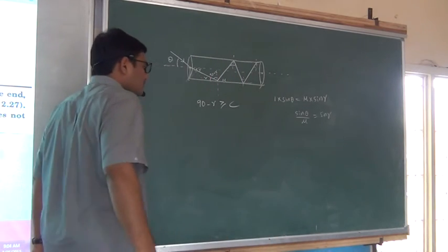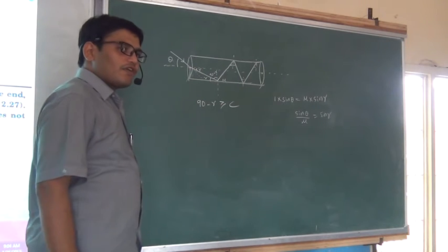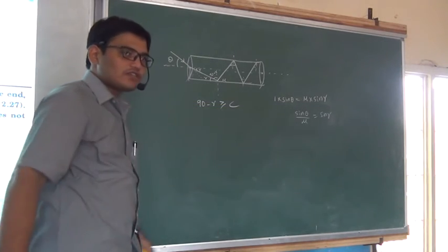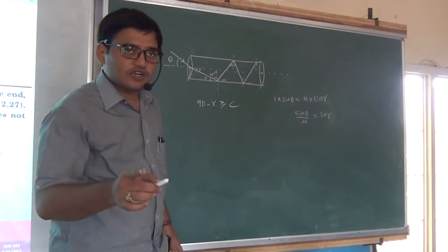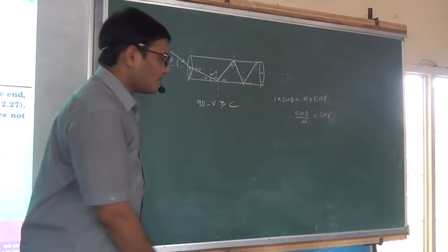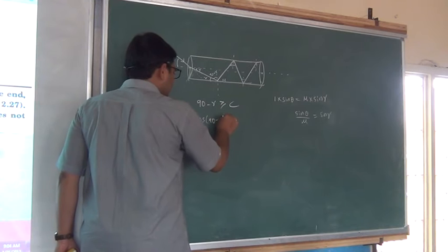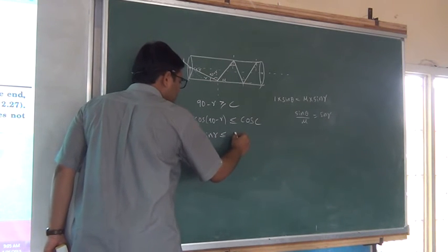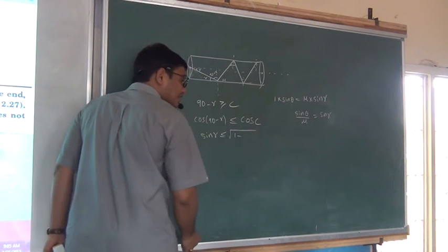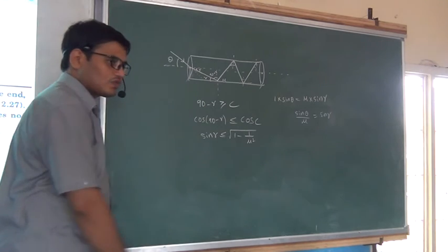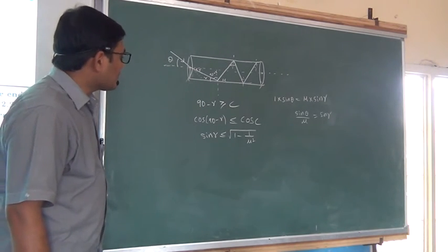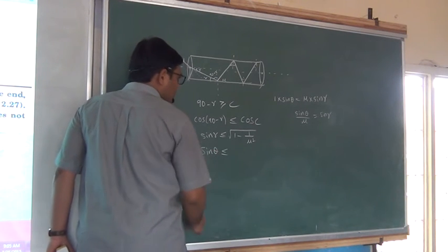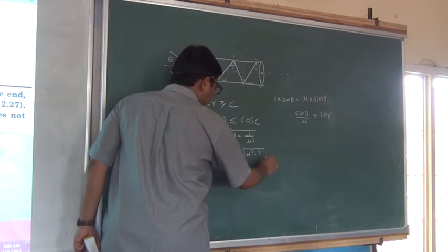Now, I am taking cos on both sides of the inequality 90 minus R ≥ critical angle C. Since cosine is a decreasing function, the inequality reverses: cos(90 minus R) ≤ cos C, which gives sin R ≤ cos C. Cos C equals under root of 1 minus sin squared C, and sin squared C equals 1 over mu squared. So substituting, sin theta upon mu is less than or equal to under root of mu squared minus 1, divided by mu.